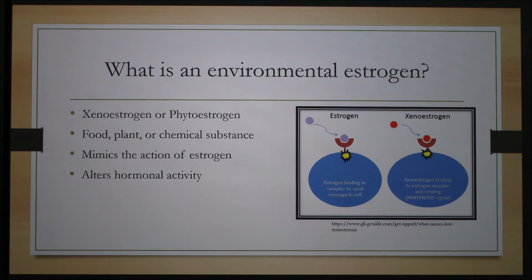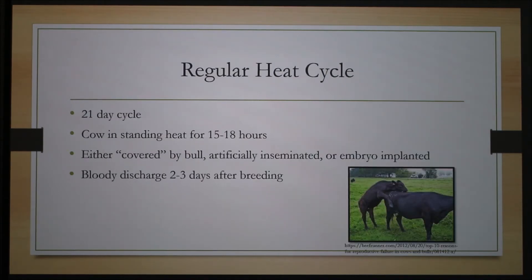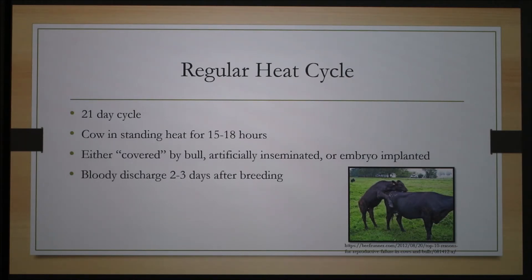Before I begin on some common environmental estrogens, I'd like to talk about the normal heat cycle of a cow. It is 21 days in length and contains a 15 to 18 hour period of standing heat. At this time, the cow will either be covered by a bull, artificially inseminated, implanted with an embryo, or not bred at all and allowed to come out of heat. There are many factors that can affect a cow's heat cycle and make it difficult to detect estrus, or for her to ovulate at all. She will also exhibit a bloody discharge two to three days after a breeding. This picture depicts a cow in standing heat.